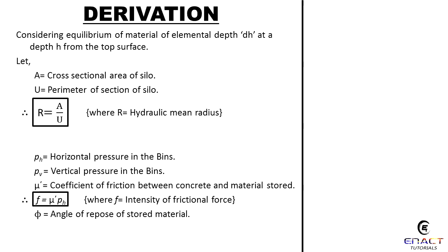Starting the derivation, considering equilibrium of material of elemental depth dh at a depth h from the top surface. Let A = cross-sectional area of silo, U = perimeter of section of silo. Therefore R = A/U, where R = hydraulic mean radius. pH = horizontal pressure in the bins, pV = vertical pressure in the bins.